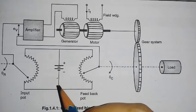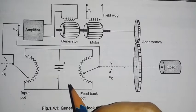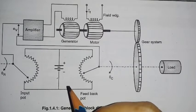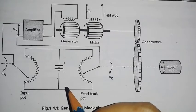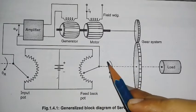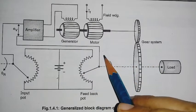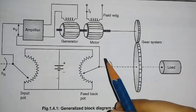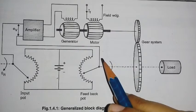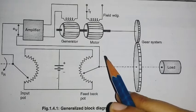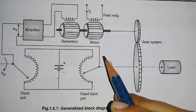The servo system is one in which the output is some mechanical variable like position, velocity, or acceleration. The output of a servo system is always in mechanical variable form, such as position, velocity, and acceleration.